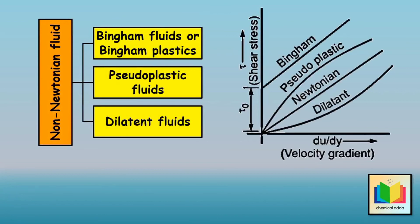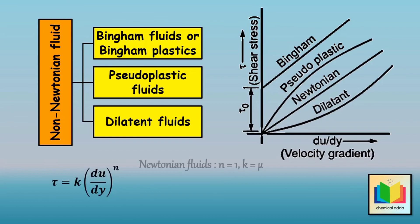The experimental curves for pseudoplastic as well as dilatant fluids can be represented by a power law, also called the Ostwald–de Waele equation: tau = k × (du/dy)^n, where k and n are arbitrary constants with different values for different fluids. For Newtonian fluids, n = 1 and k = μ. For pseudoplastic fluids, n < 1. For dilatant fluids, n > 1.